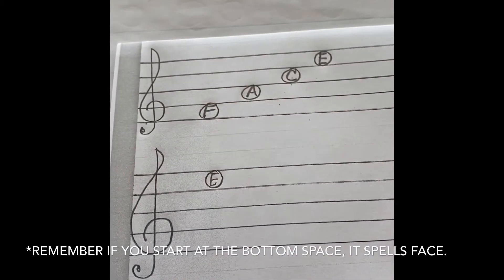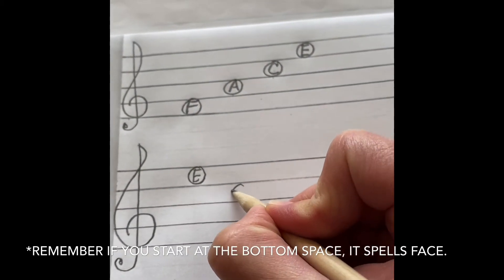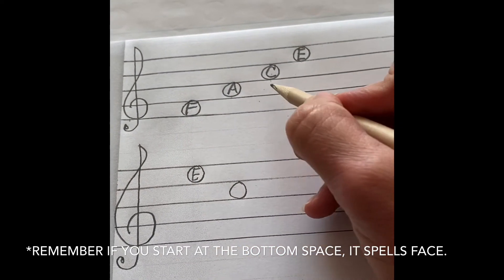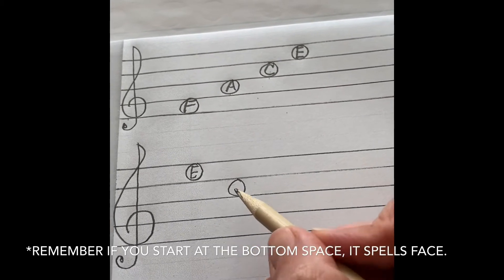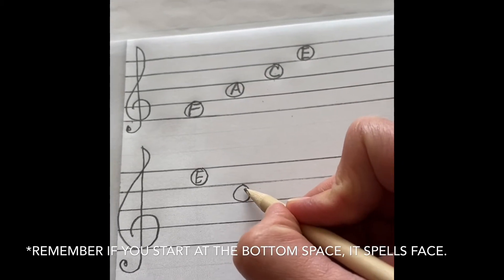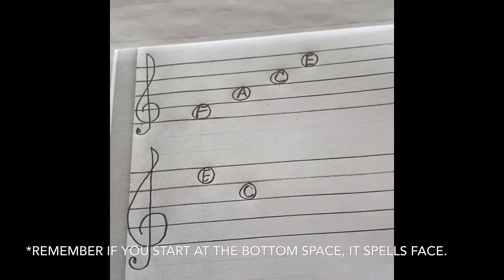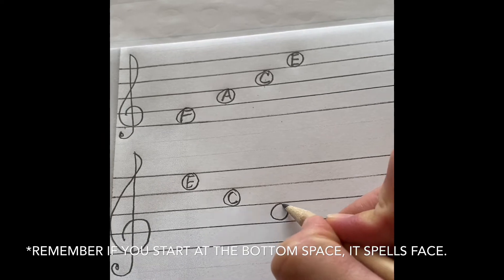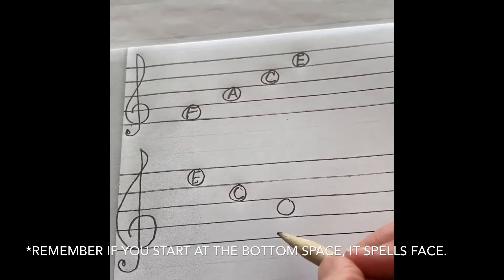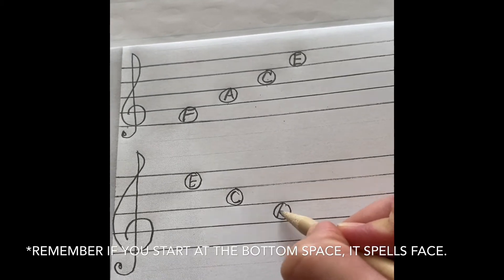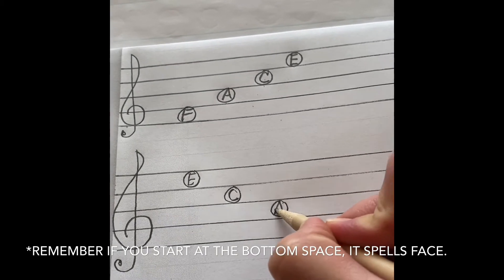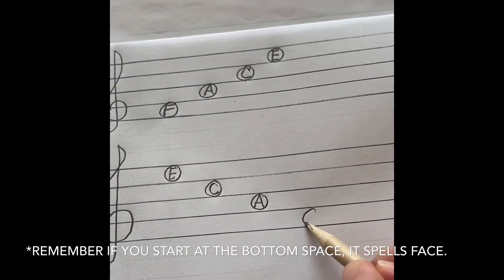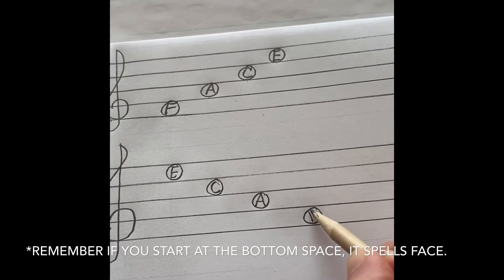The next one, if you count the spaces—one, two, three—is a C. The next note, you'll count the spaces again—one, two—it's an A. And that bottom space, hopefully you guys got this figured out, is an F.